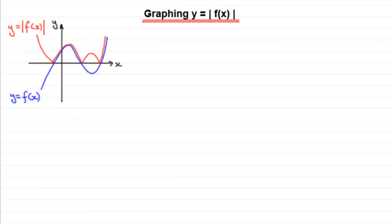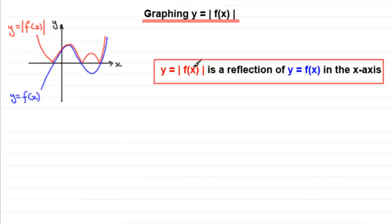Essentially, if you have a graph of the form y equals f(x), then y equals the mod of f(x) is obtained by reflecting any part of y equals f(x) that lies below the x-axis in the x-axis.